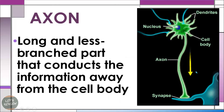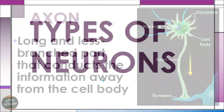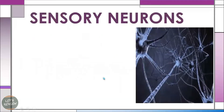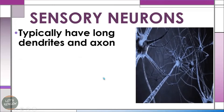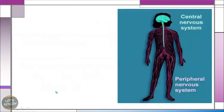The axon is the long and less branched part compared to dendrites, and it conducts information away from the cell body. Now, what are the different types of neurons? First, we have sensory neurons. They typically have long dendrites and axons, and they carry messages from the receptor organs such as the skin, the eyes, the nose, and the ears. Sensory neurons collect messages from the different body parts and send them to the main organs of our nervous system.